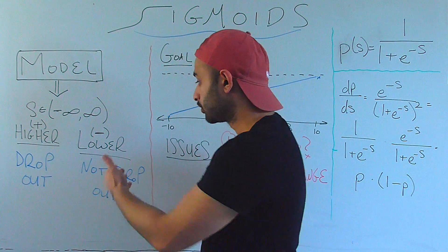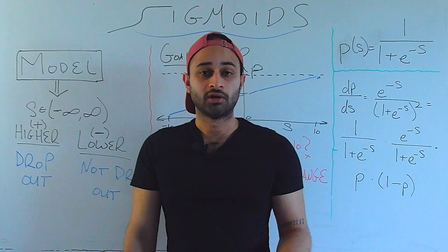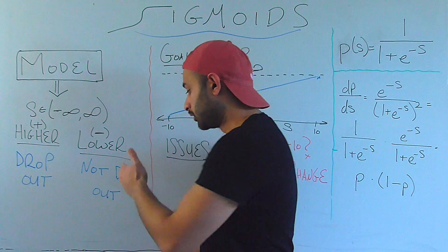And conversely, the lower the score is, so the more towards minus infinity, the more evidence we have that the student will not drop out.